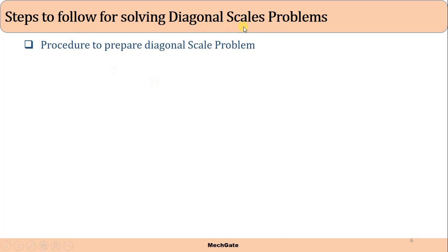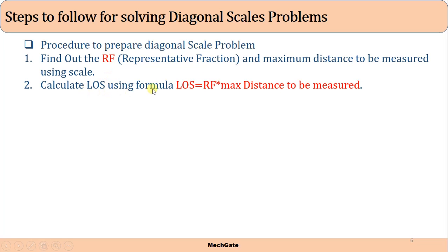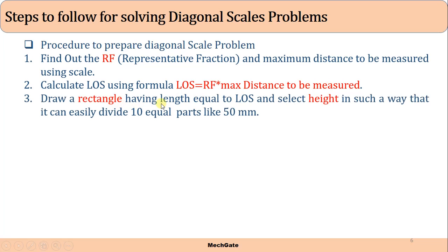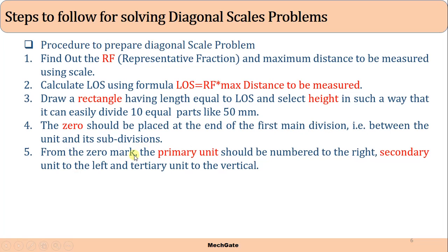The steps to follow for solving a diagonal scale problem are mostly similar to the plane scale. First, find the representative fraction (RF) and the maximum distance to be measured. Second, calculate the length of scale using: length of scale = RF × maximum distance to be measured. Third, draw a rectangle with length equal to the calculated length of scale and choose a height that can easily be divided into 10 equal parts — for example, 50 millimeters, giving 5 mm per division.